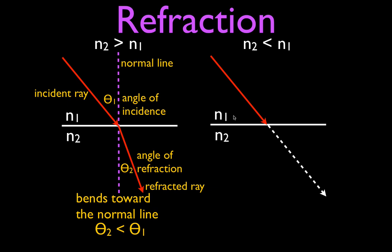We know it's going to bend. The first thing we always do is draw the normal line. In the previous case, when light went into a material with a higher index of refraction it bent towards the normal line. Now it's going into a material with a lower index of refraction — so what is it going to do? That's right, it's going to bend away from the normal line.